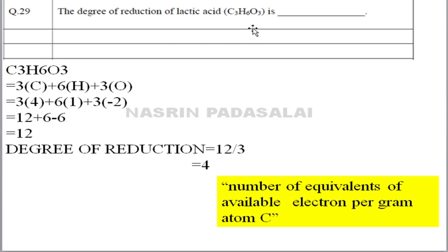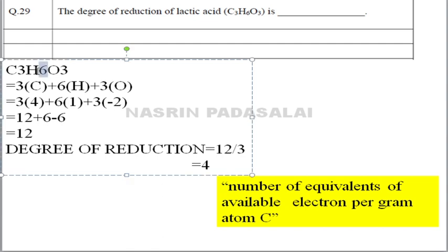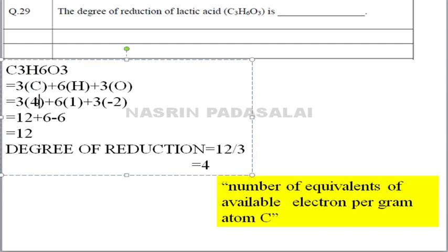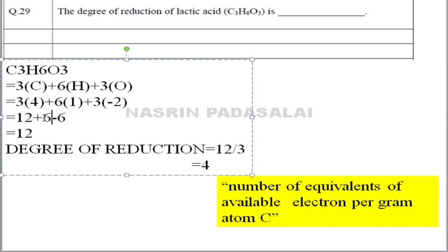Next: the degree of reduction of lactic acid — a highly repeated GATE question. The formula is provided. The degree of reduction means equivalents of available electrons per gram of carbon. Lactic acid is C₃H₆O₃. Number of equivalents = (3 × 4) + (6 × 1) + (3 × −2) = 12 + 6 − 6 = 12. The valency of C is 4, H is 1, and O is −2.